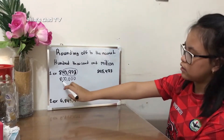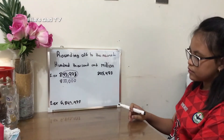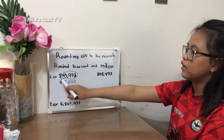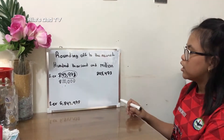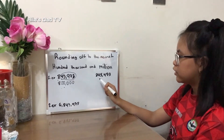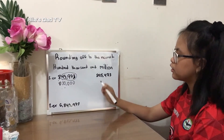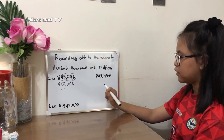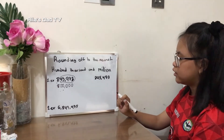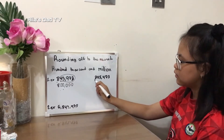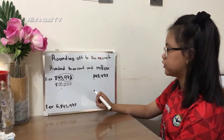So now it became eight hundred thousand. See, it became easier to read than the original number. Here is another example. We will also be rounding this off to the nearest hundred thousand. The first step is to identify the number in the hundred thousands place, which is eight.